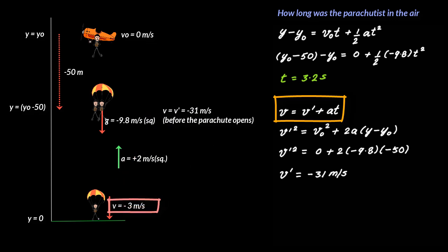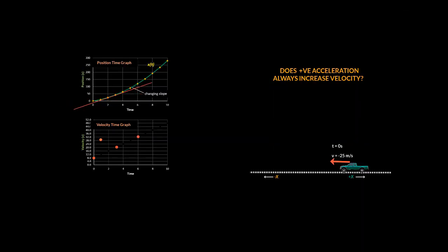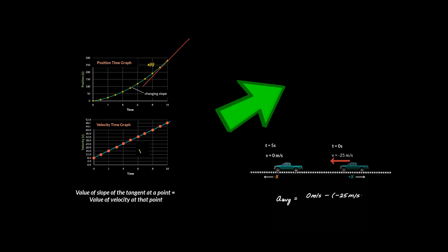A parachute is used to reduce velocity as you fall toward the ground, and the deceleration is taken as positive acceleration because it acts upward — another example showing that the sign of acceleration indicates direction only. So: −3 = −31 + 2t, giving t = 14 seconds. The total time in the air is 14 + 3.2 = 17.2 seconds. If you want to understand kinematics well enough to crack high-level problems, go through this playlist. If you liked this video, give it a thumbs up and see you in the next video.